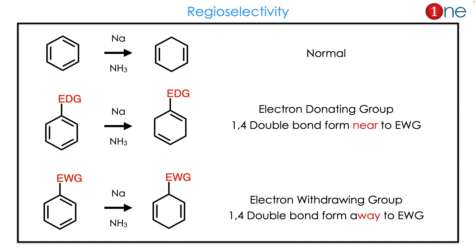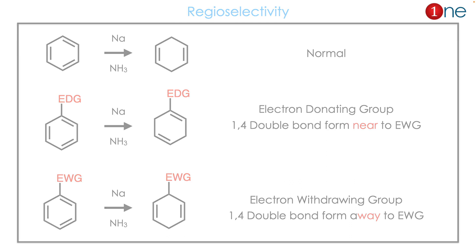How is regioselectivity achieved? In normal reduction, you will have a 1,4-diene. If you have an electron-donating group, the diene is formed near the electron-donating group, also in 1,4 form. If you have an electron-withdrawing group, the diene is formed away from the electron-withdrawing group, also in 1,4 form.